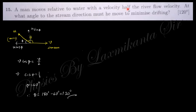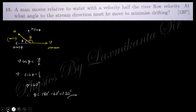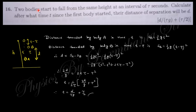The next question: a man moves relative to water with a velocity half the river flow velocity. At what angle to the stream direction must he move to minimize drifting? Since v·cosφ = v/2, we get φ = 60°, meaning the angle with the stream direction is 120°.